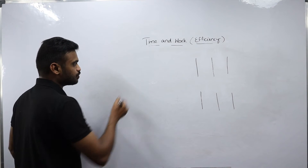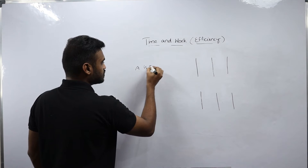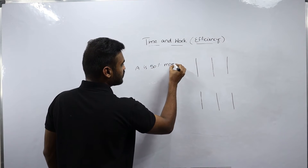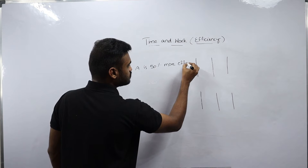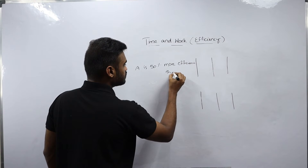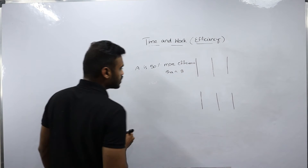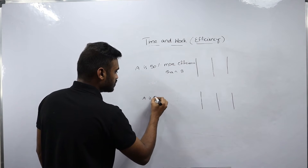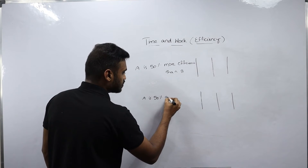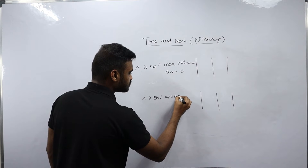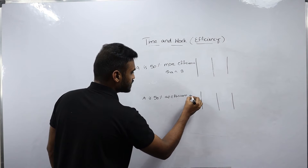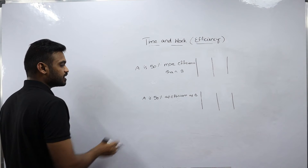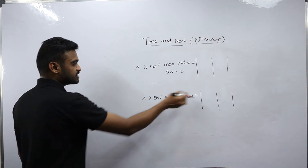Example one: A is 50% more efficient than B. Example two: A is 50% as efficient as B. Note the difference in the keyword: 'more efficient' versus 'as efficient as.'